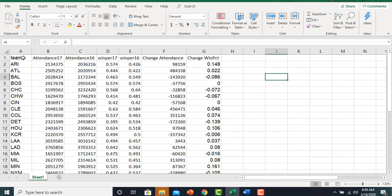Alright, so we have our Major League Baseball teams here in the team column. We have that team's annual attendance in 2017, the team's annual attendance in 2016, the team's winning percent in 2017, and the team's winning percent in 2016.